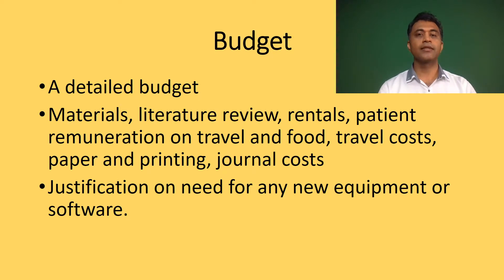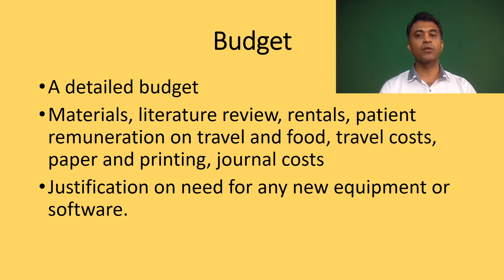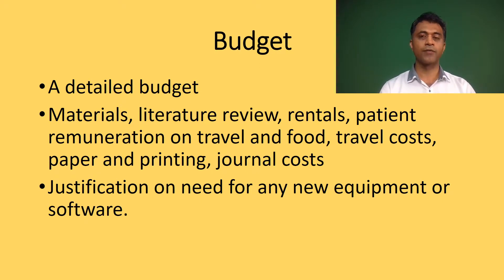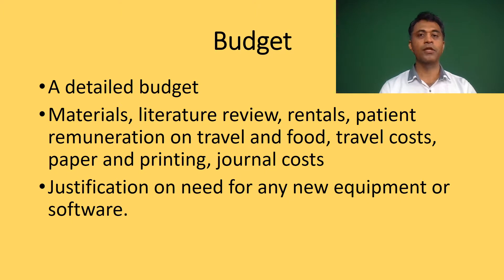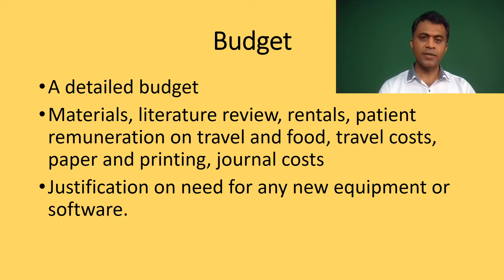The next section is the budget. Please provide a detailed budget with breakdowns. Frequent categories seen in a budget include materials, chemicals, journal article costs for literature review, rentals, patient remuneration for travel and food, travel costs for the study, paper and printing, and publication costs of the research report. Justification for any new equipment or software should also be provided.